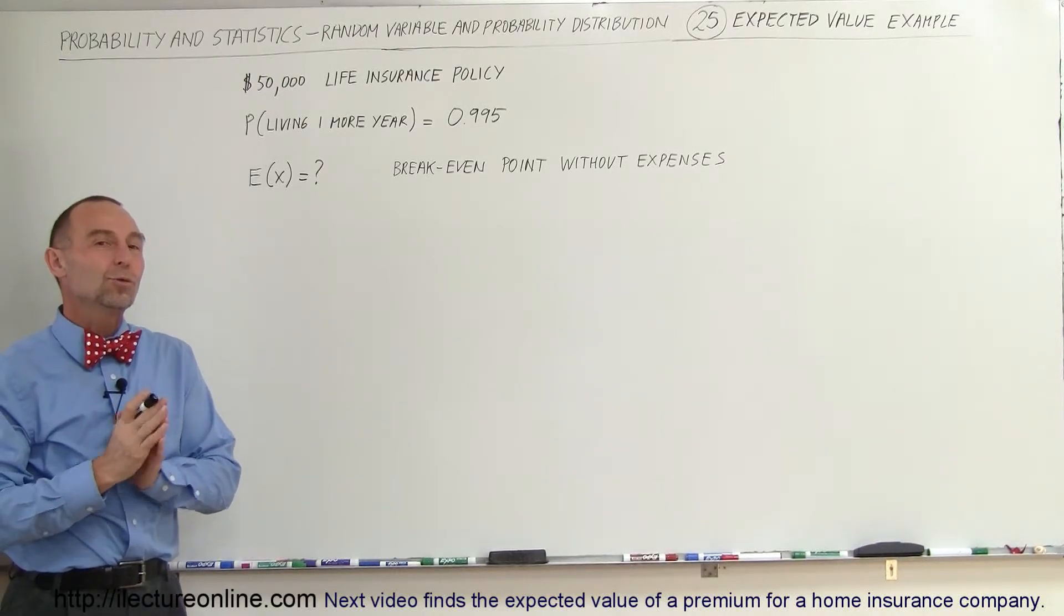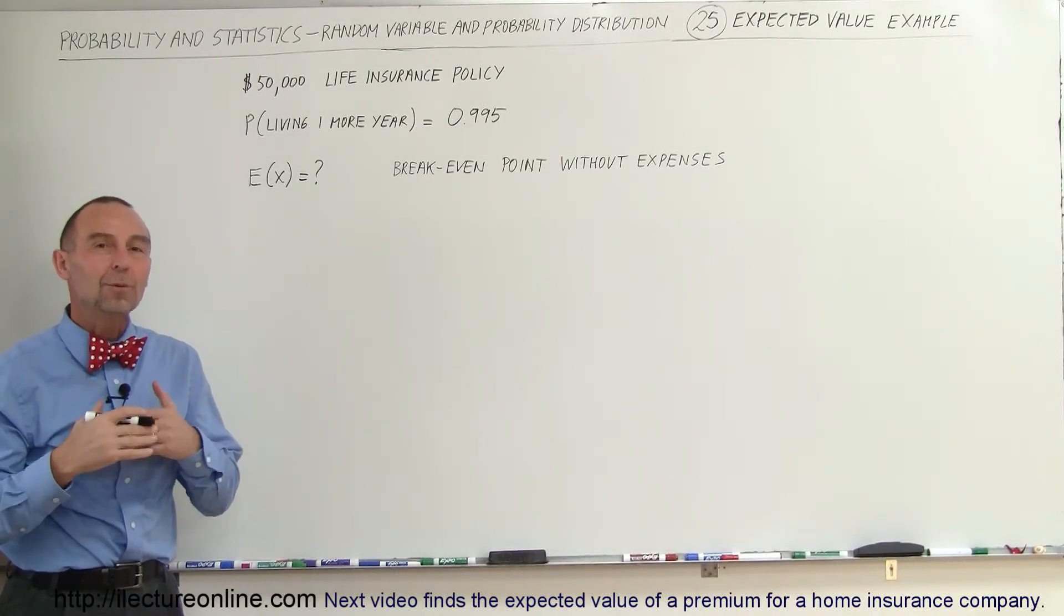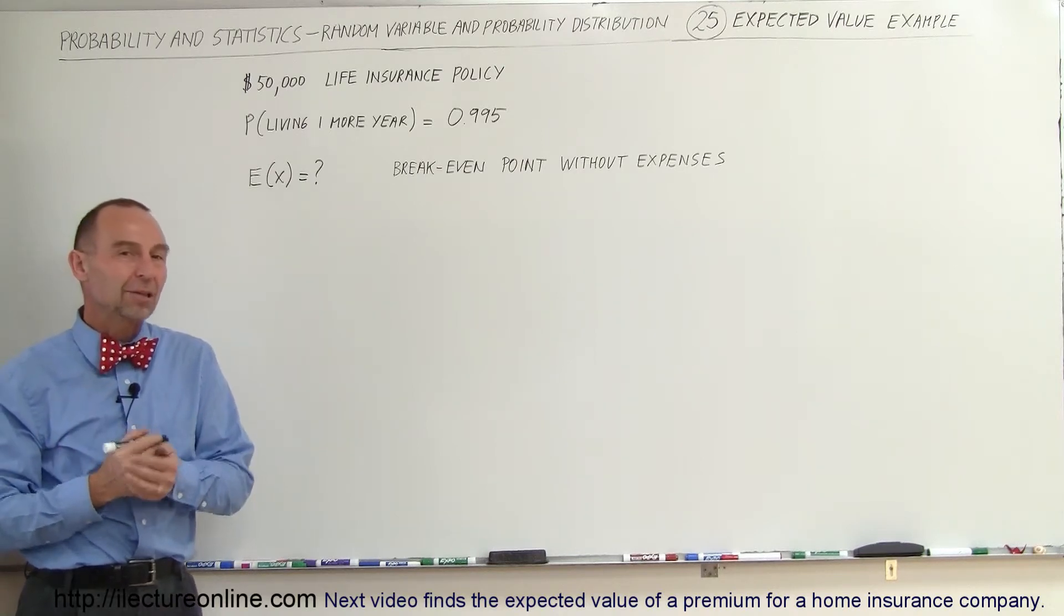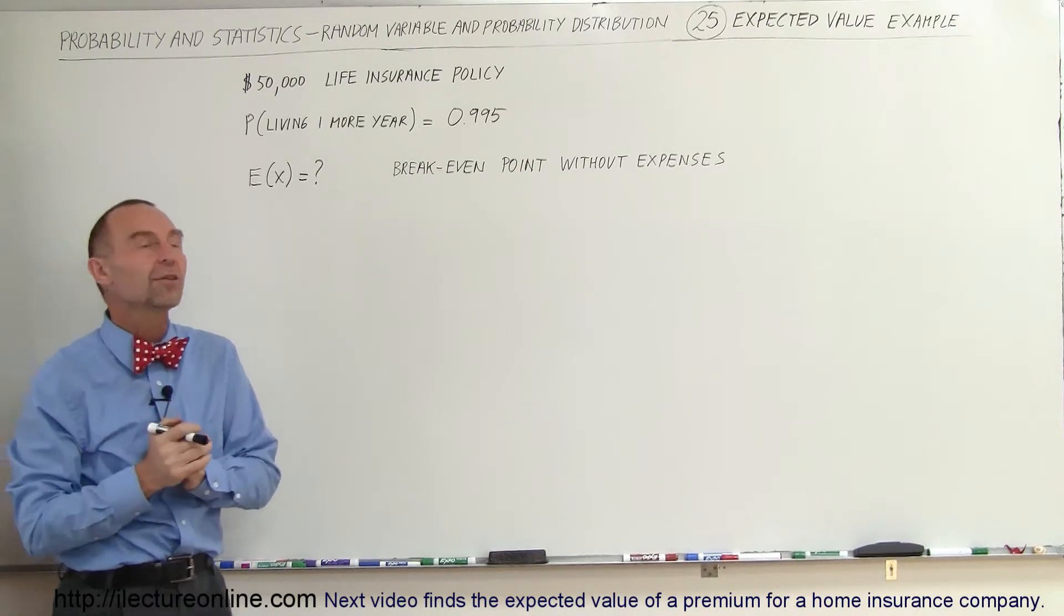Welcome to Electronline and now we're going to do a few examples of how insurance companies operate. And insurance companies operate with something called the expected value.